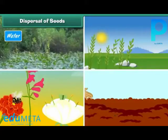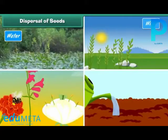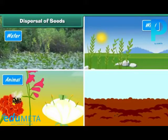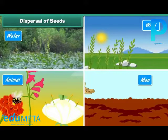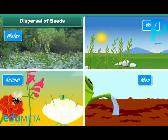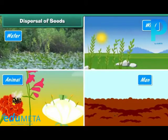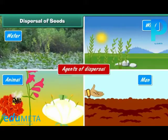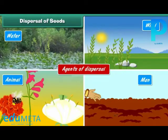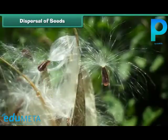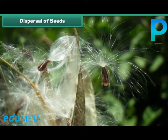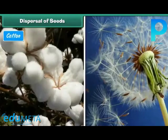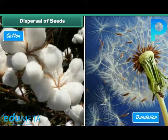Seeds are dispersed by water, wind, animals, and even man. These are known as agents of dispersal. Wind disperses seeds which are light in weight and have wings or feathers, for example, cotton, dandelion, and maple.